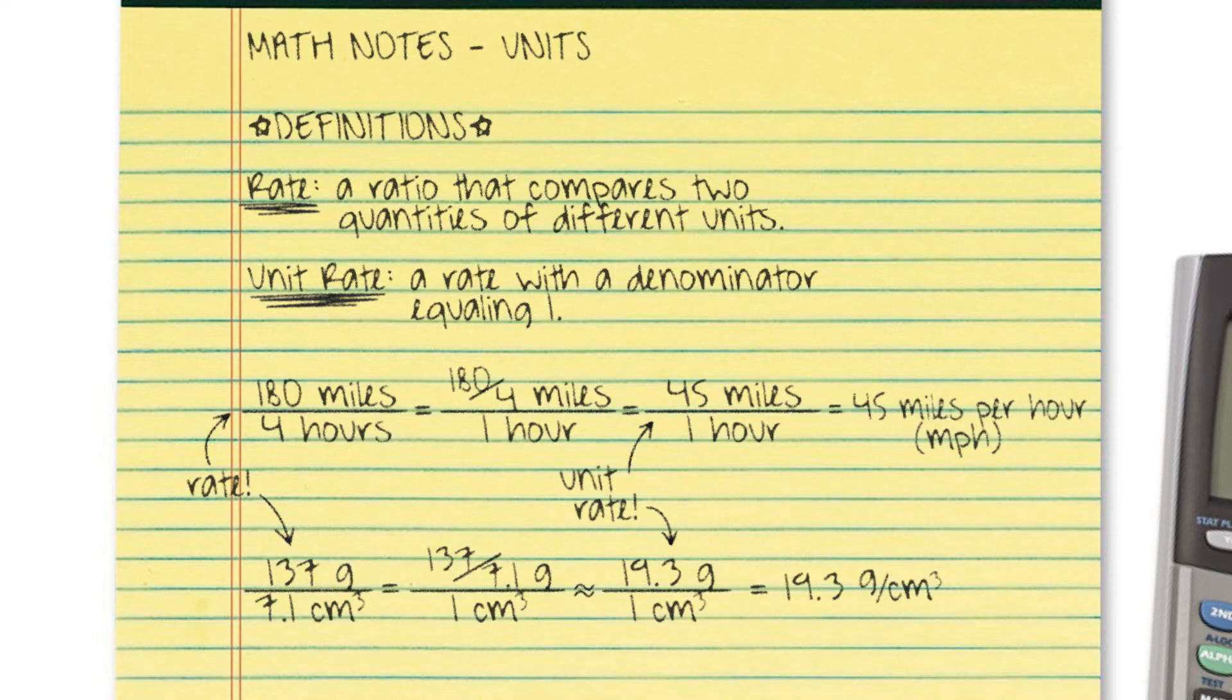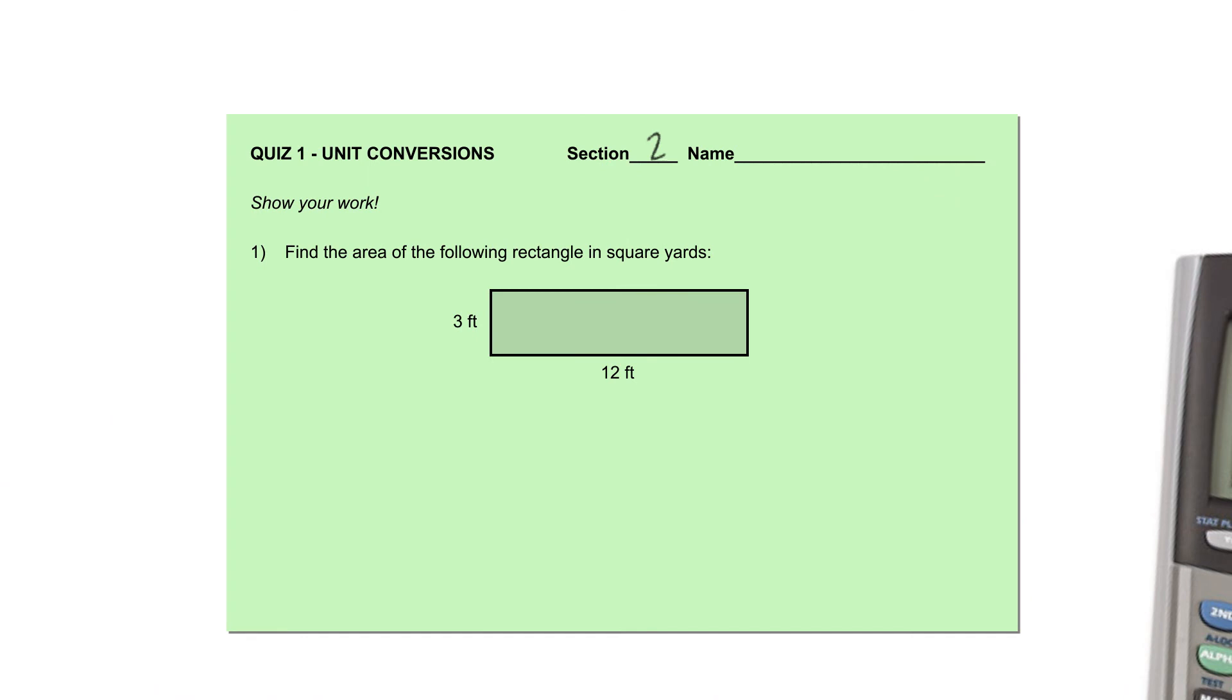To finish, let's take a quiz. Now remember to be careful when units are multiplied together. How do I do this? Oh yeah! To find the area of a rectangle with side lengths 3 feet and 12 feet, I multiply the length by the width to get 36 square feet, with square feet, a unit that measures area.